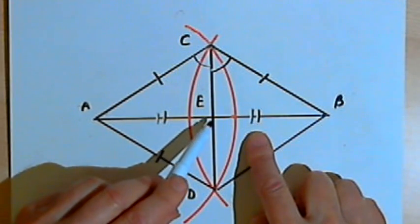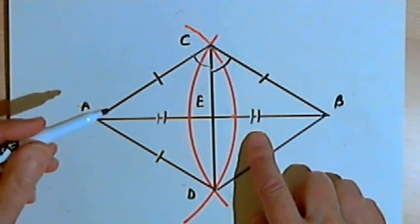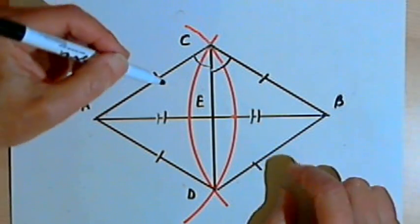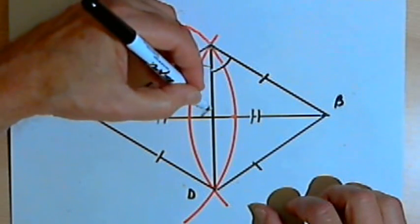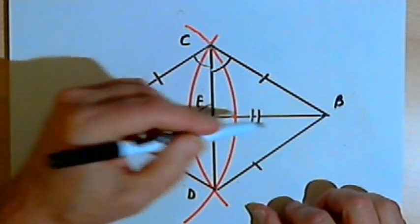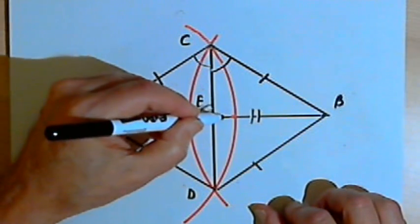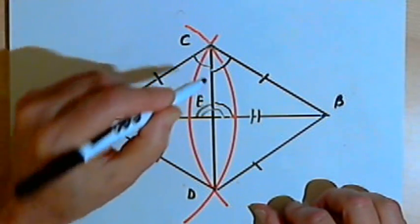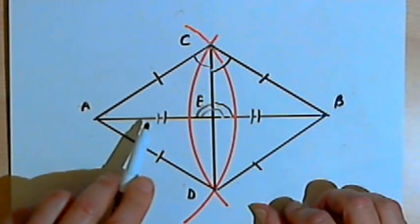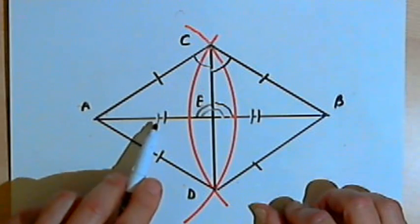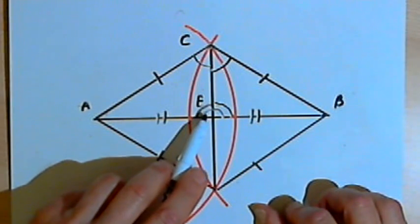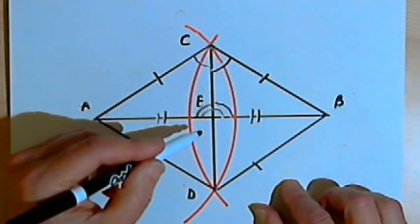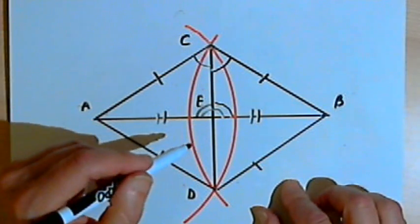So now I know it's a bisector. Now I want to show it's perpendicular. Angle AEC is congruent with angle BEC. Those two angles together form a straight angle—180 degrees. So they're equal supplementary angles, which means they must both be 90-degree angles.